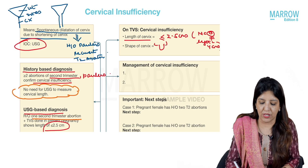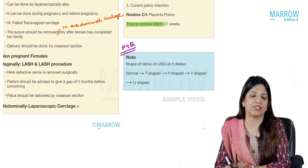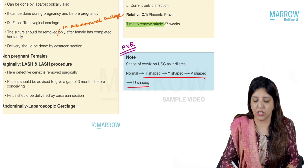As the cervix dilates, its shape changes. Normally on ultrasound the cervix appears T-shaped. As it begins to dilate, it becomes Y-shaped, then V-shaped. The cervix then dilates further and becomes part of the lower uterine segment — this is called taking up of the cervix — and the shape becomes U-shaped. So the progression is T to Y to V to U.